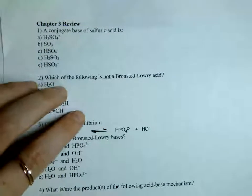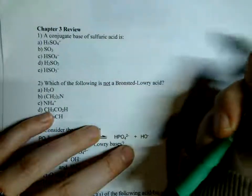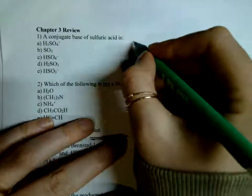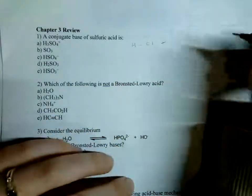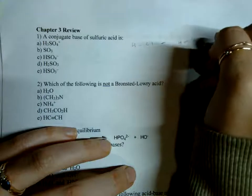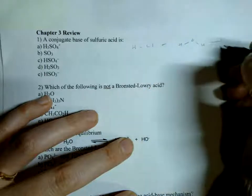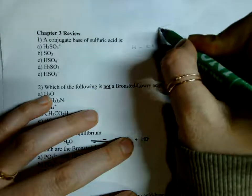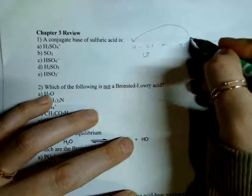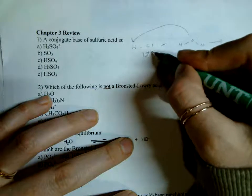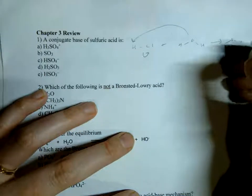Okay, conjugate base of sulfuric acid. Let's just review conjugate acid and base — I think we talked about this in Gen Chem. If we have HCl and water, the oxygen will attack the proton. A new bond will be formed from the lone pairs, and the lone pairs left behind will go to the chlorine atom.